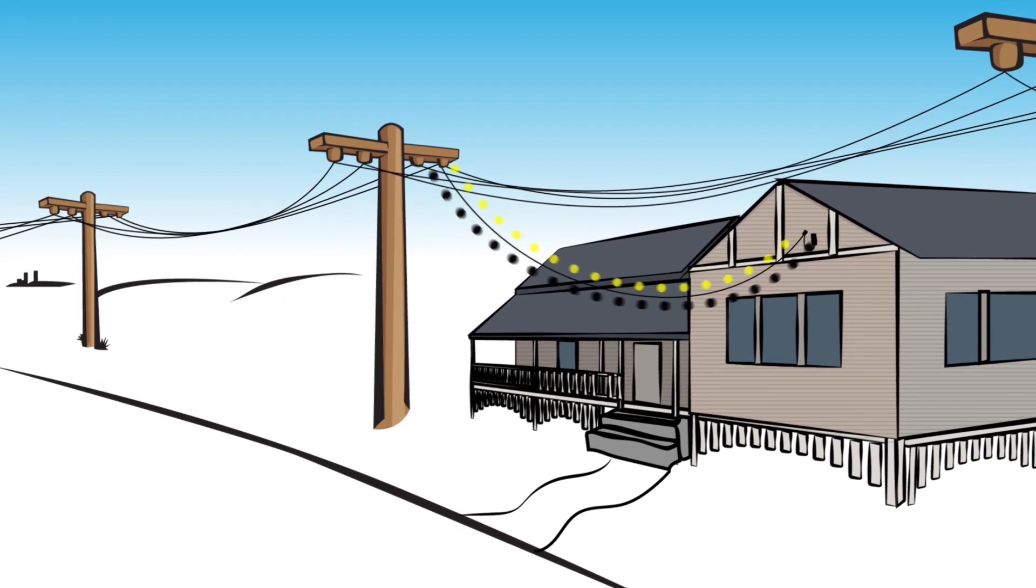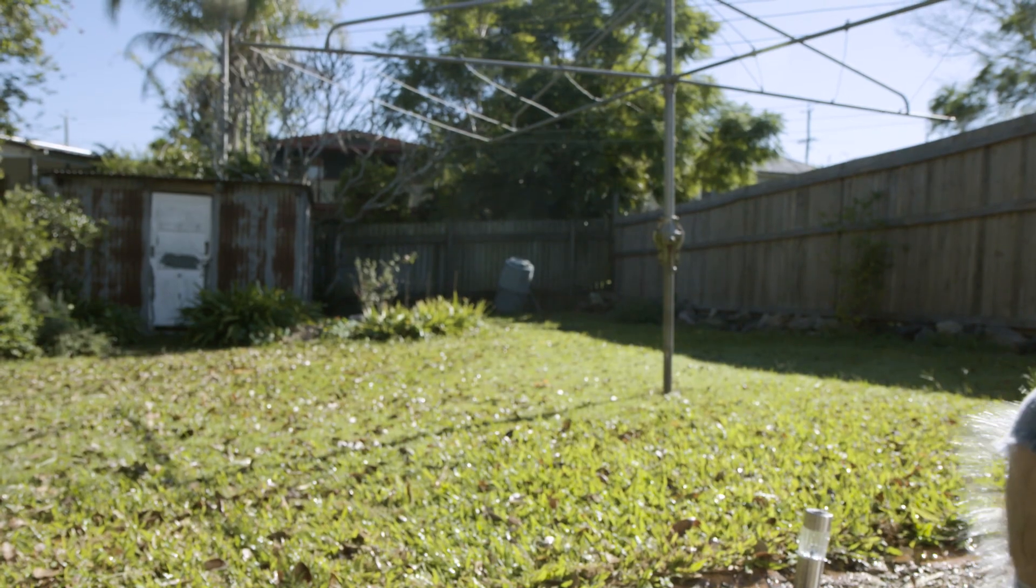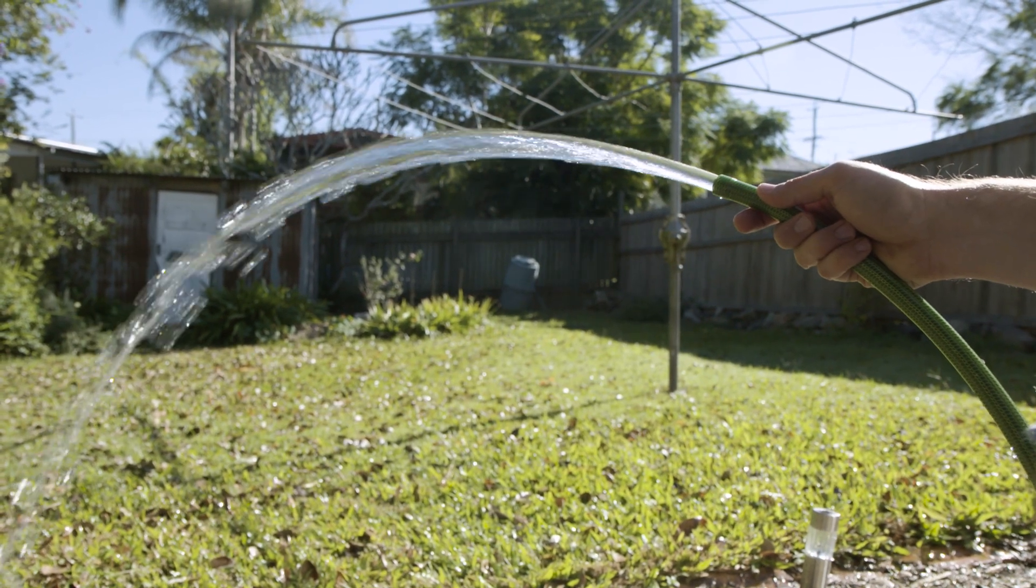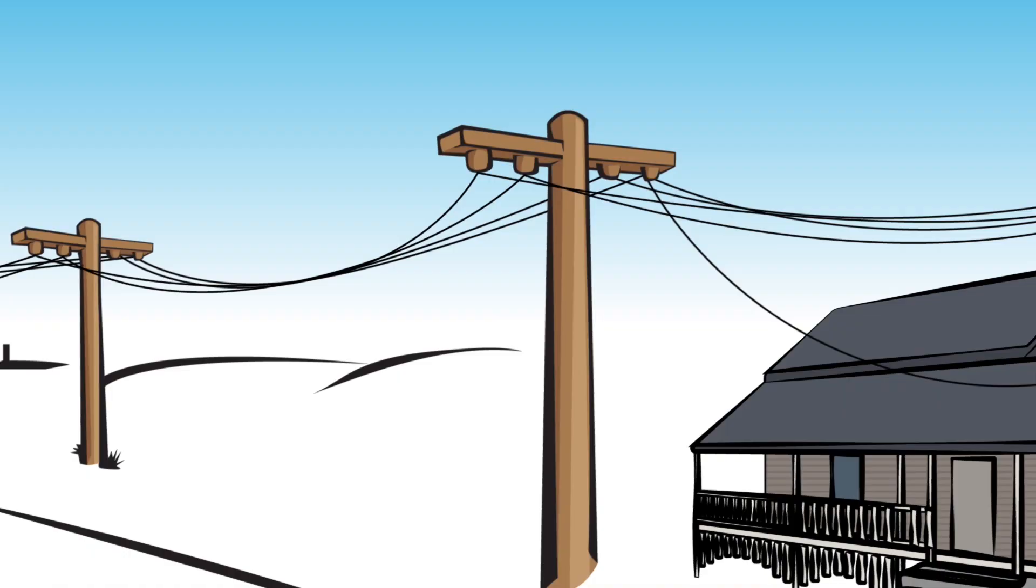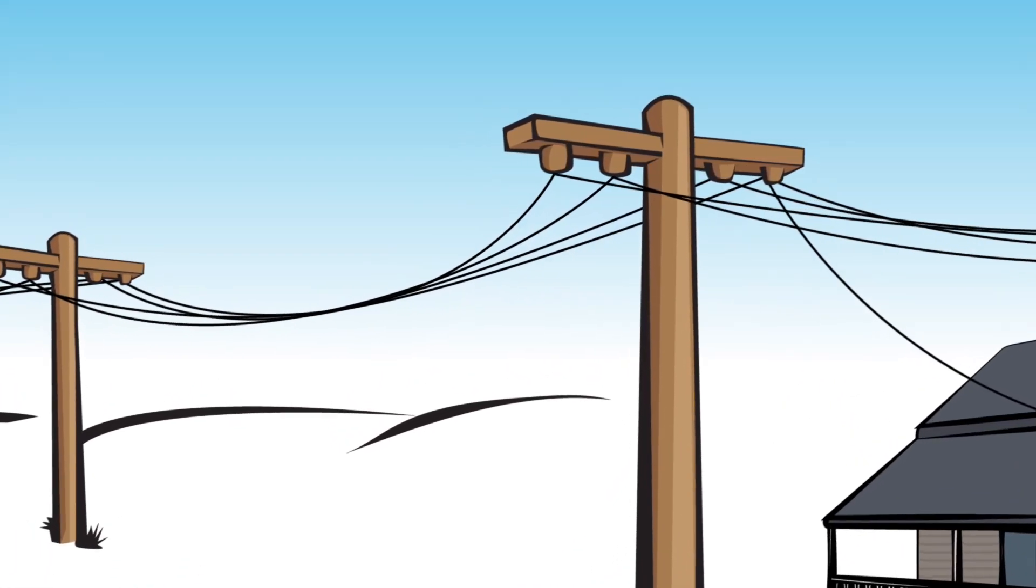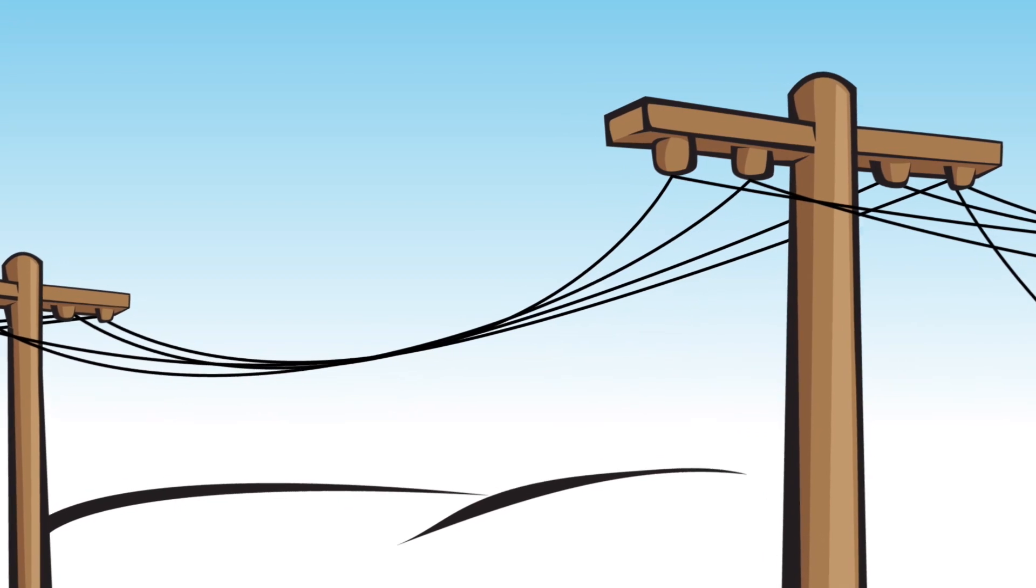Electricity is the flow of electrons through a conductor like water through a hose. Unlike water which is measured in litres, electricity has electron flow or current which is measured in amps.